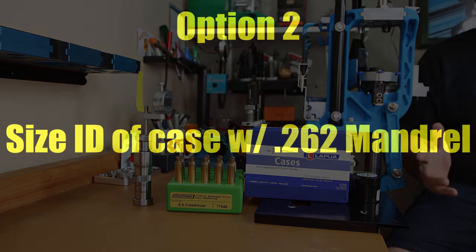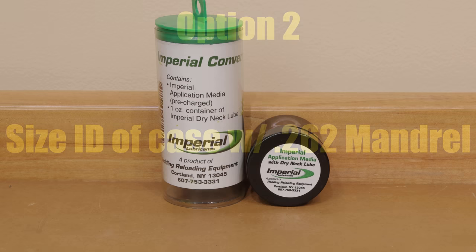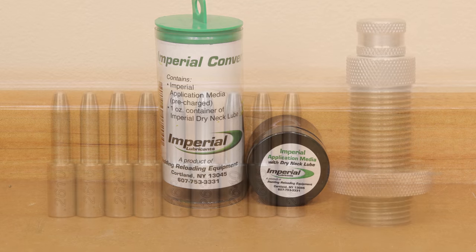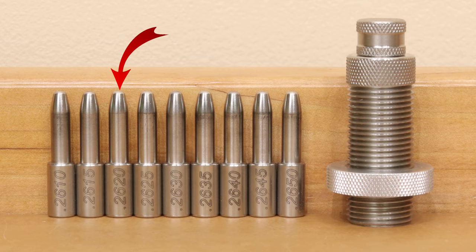Option 2 is my standard process for new brass that I'm currently using. Simply just running dry neck lube and a 262 mandrel, chamfering, deburring, and off to the races.